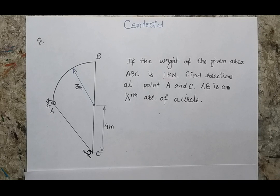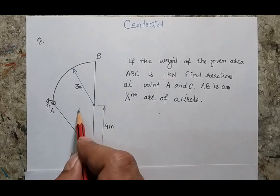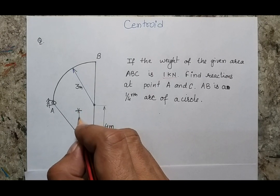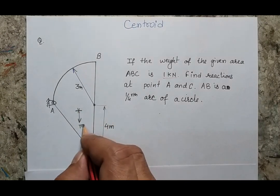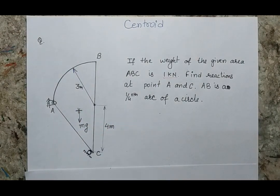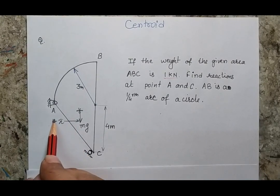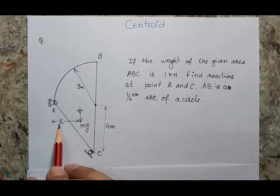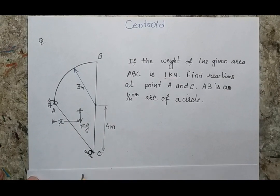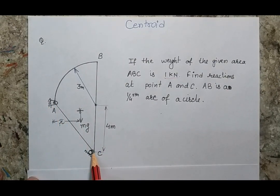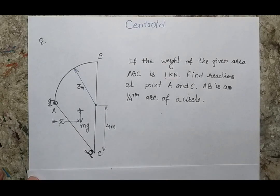Once I calculate the centroid — suppose the centroid of this body lies here — I will be able to define the force mg which will act at that point, and this distance is defined by x_bar. So once I get x_bar, I will be able to calculate the moment at point A or at point C and then find the reactions at point C as well as at point A.